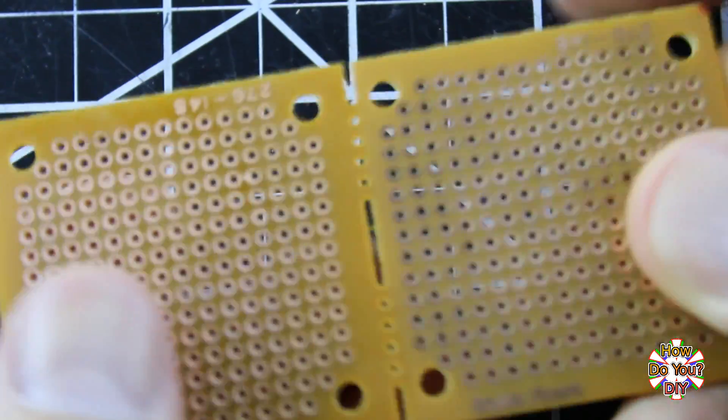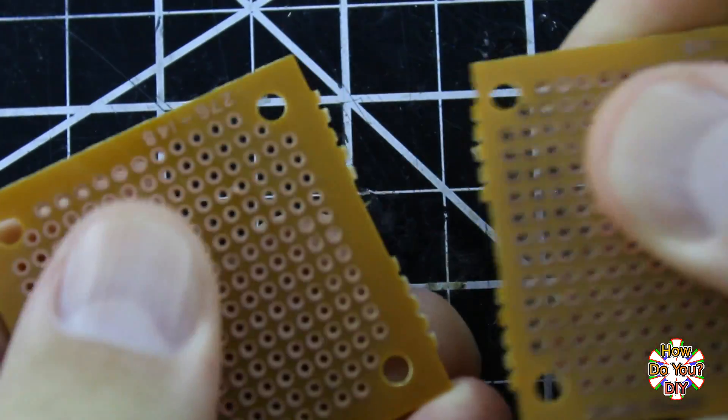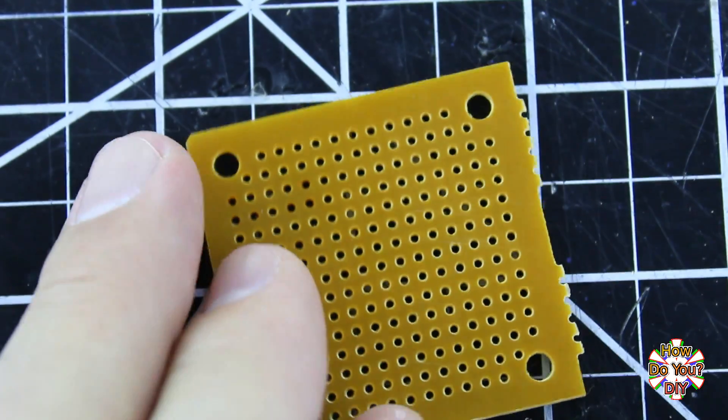I have a couple of small perfboards here, and you can see that there is a section that will let you easily break these two apart. If you need it even smaller, you can cut it.